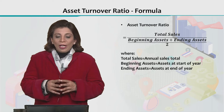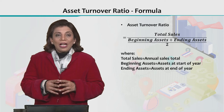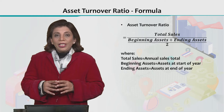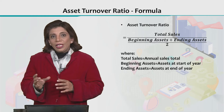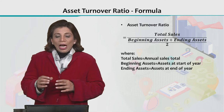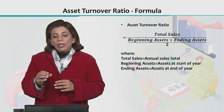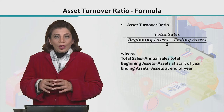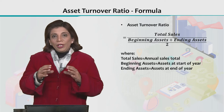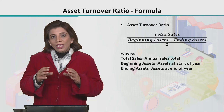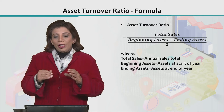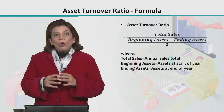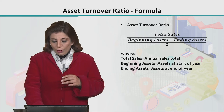When we look at the formula used to calculate the asset turnover ratio, we put the total sales value in the numerator and the average of total assets in the denominator. When we divide total sales by the average of total assets, we get the value called the asset turnover ratio.